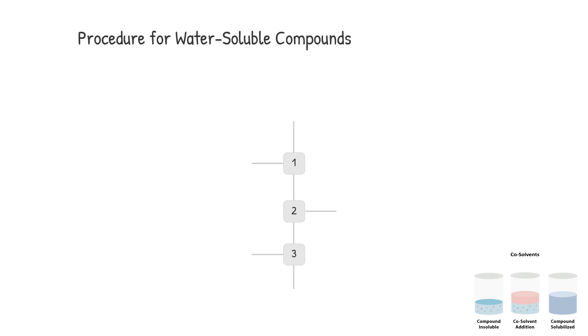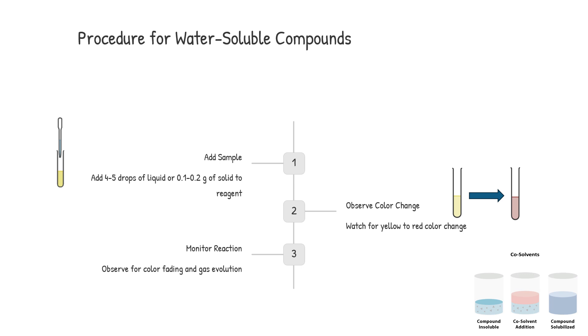For water-soluble compounds, add 4-5 drops of the liquid unknown or 0.1 to 0.2 grams of solid to 1 milliliter of ceric ammonium nitrate reagent. Mix thoroughly and observe if the yellow color changes to red. Alcohols react to form a red cerium-4 compound. If a red color develops, watch for it to fade as oxidation occurs. If no change is noted within 15 minutes, allow the mixture to stand for several hours or overnight. Note any gas evolution.